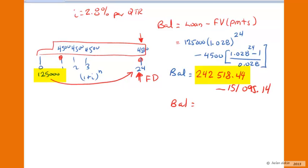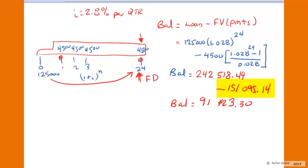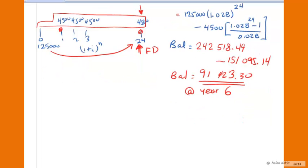So a loan left alone — that $125,000 debt — would amount to a $242,000 debt after six years without any payments. We did make payments of $4,500 per quarter, so it makes sense to subtract the final value of those payments, which is approximately $151,000. With that subtraction, we end up with a net difference of $91,423.30. That's the balance outstanding at year six. We borrowed $125,000 originally and still owe $91,000, meaning we've paid off approximately $33,500 of principal over the first six years.